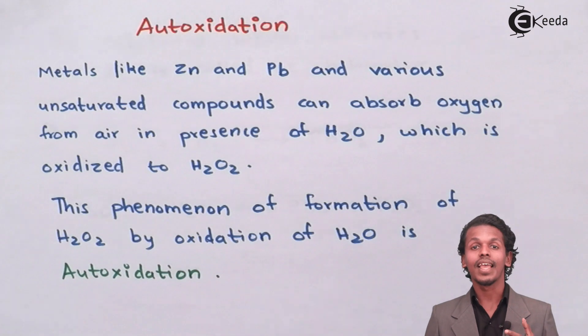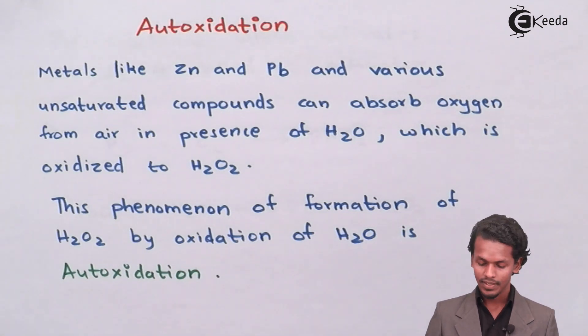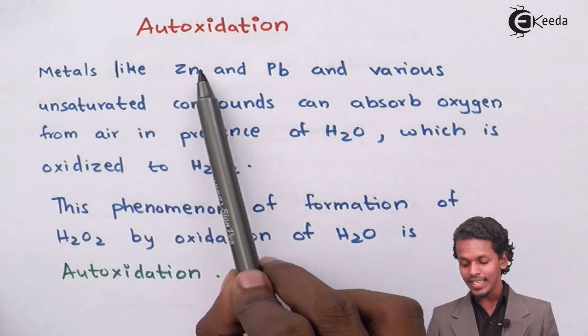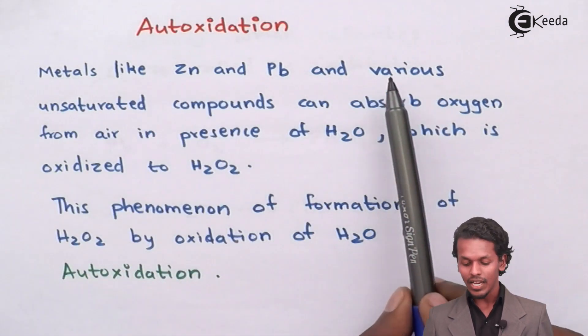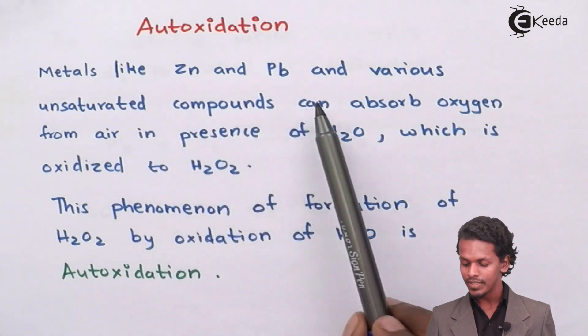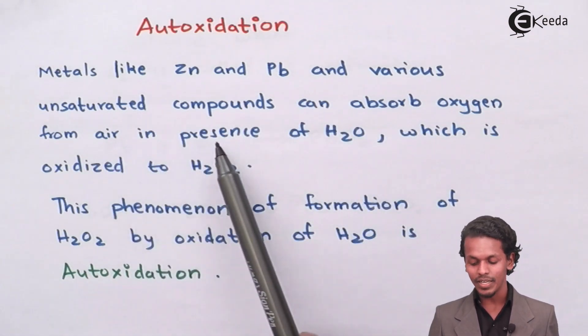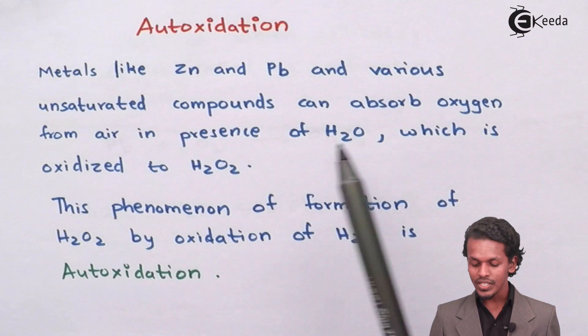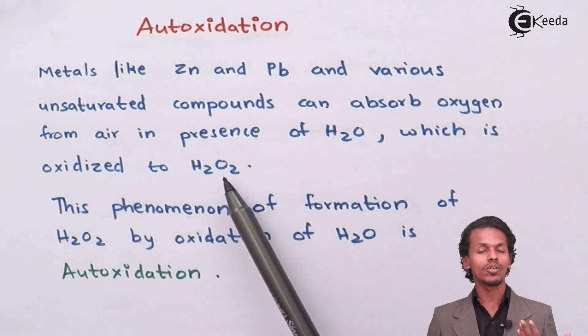So let us see with the help of a definition known as autoxidation. It says metals like zinc and Pb that is lead and various unsaturated compounds can absorb oxygen from air in presence of H2O which is oxidized to H2O2 that is hydrogen peroxide.